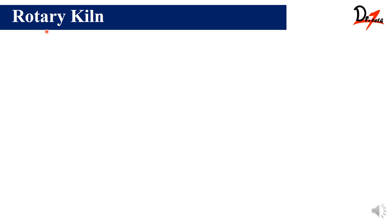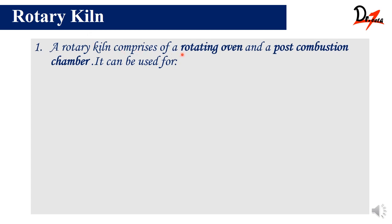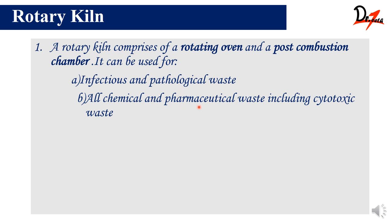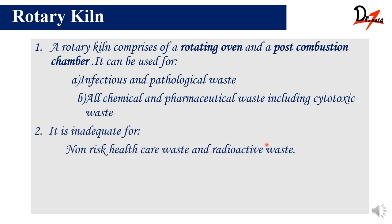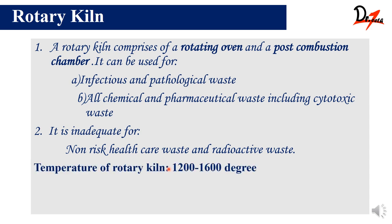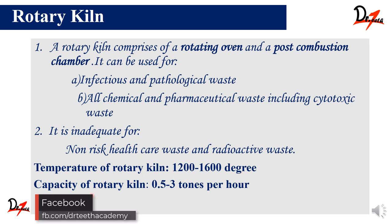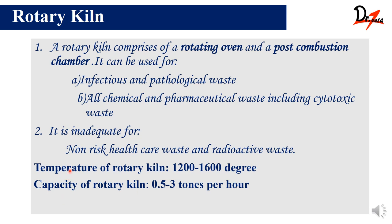The second process for treating waste is the rotary kiln, which comprises a rotating oven and a post-combustion chamber. It can be used for infectious, pathological, chemical, pharmaceutical, and cytotoxic waste, but not for radioactive waste or non-risk healthcare waste. The temperature of rotary kiln is 1200 to 1600 degrees Celsius and the capacity is 0.5 to 3 tons per hour — please memorize these two values.